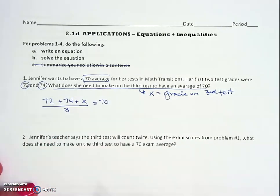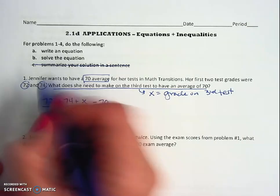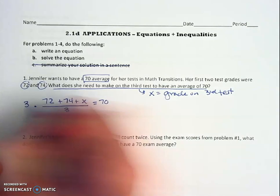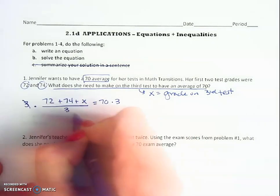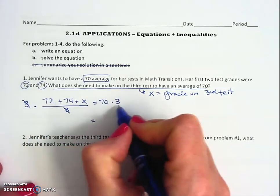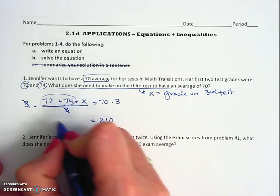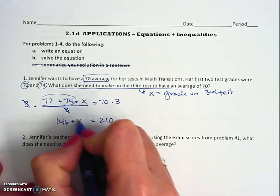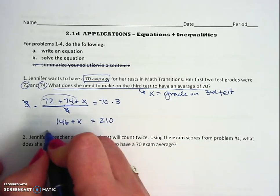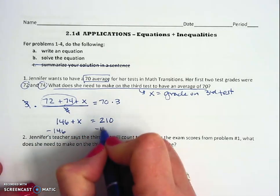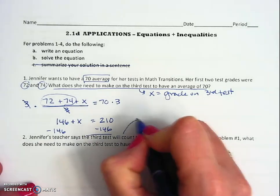Now we start working backwards to solve for x. I'm going to undo divide by 3 by multiplying, so on the right I have 210, on the left I'm going to go ahead and add these, that's going to give me 146 plus x, and then now I just subtract 146 from both sides and I get that x is equal to 64.